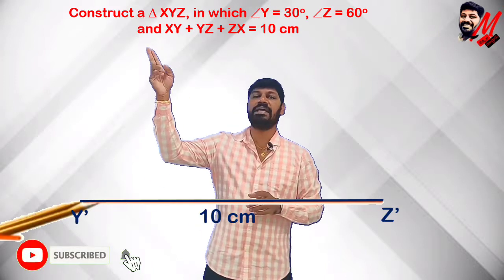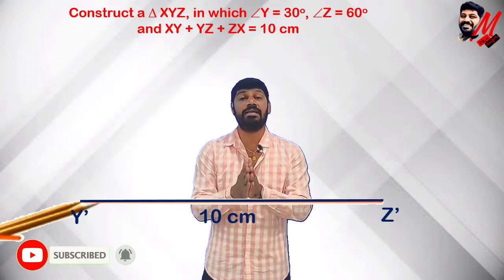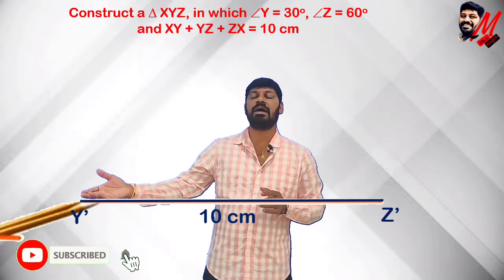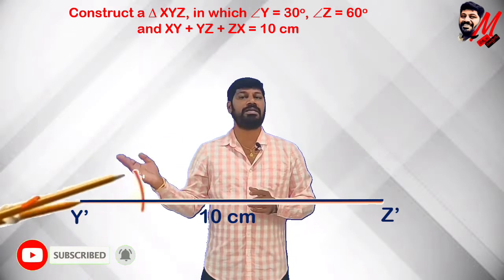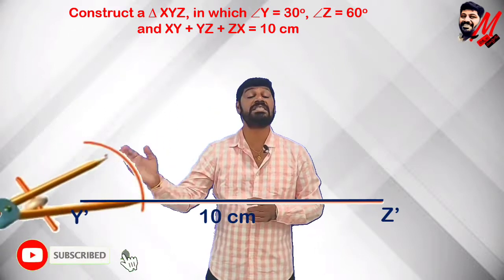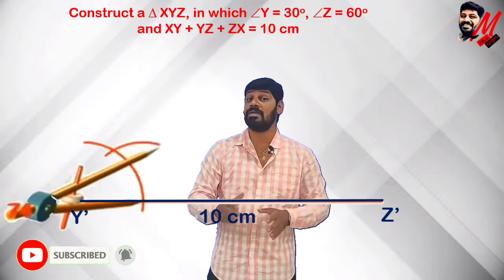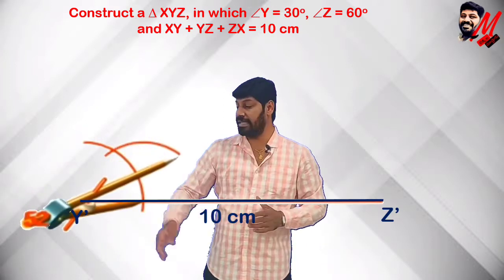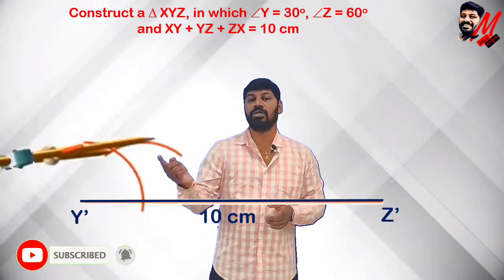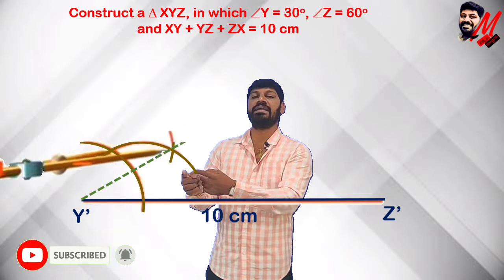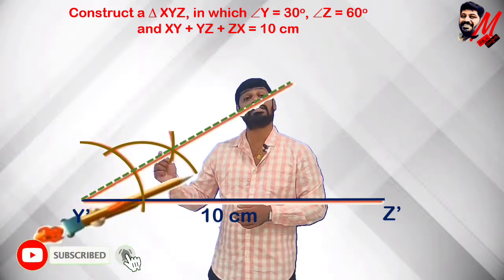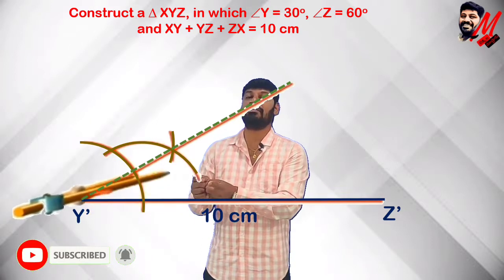We take Y'Z' and construct an angle of 15° at Y' — that is half of 30°. At Z', we construct 30° — that is half of 60°. For 60°, we use the compass to draw the standard 60° arc, then bisect it to get 30°. For the 30° at Y', we bisect 30° to get 15°.